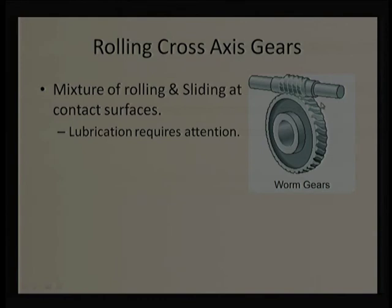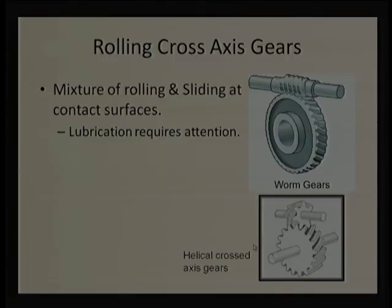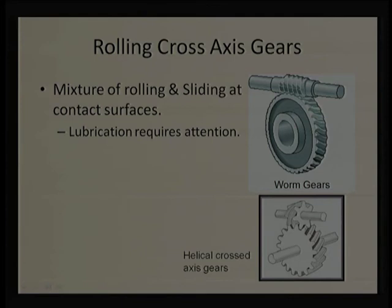Worm gears have high torque transmission capability but high sliding, reducing efficiency. They are robust for high load carrying capacity. There are other combinations — cross-axis helical gears. Because of their geometry, they make only point contact (not line contact), so stresses will be very high and load carrying capacity is lesser. That is why cross-axis helical gear pairs are used for relatively lesser torque, while worm gears handle larger torque — but even worm gears' gear ratio and torque ratio are limited.